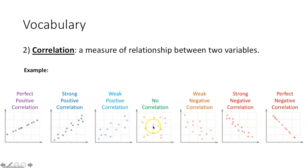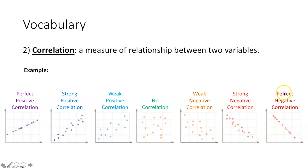No correlation means you can't tell whether the data is going up and to the right or down and to the right. A weak negative correlation means the data is going down and to the right but nowhere near a straight line. A strong negative correlation means it's getting pretty close to a straight line — you could draw a line through the data, but not necessarily through all the points. A perfect negative correlation means the graph goes down and to the right and you could draw a line through each of the points.